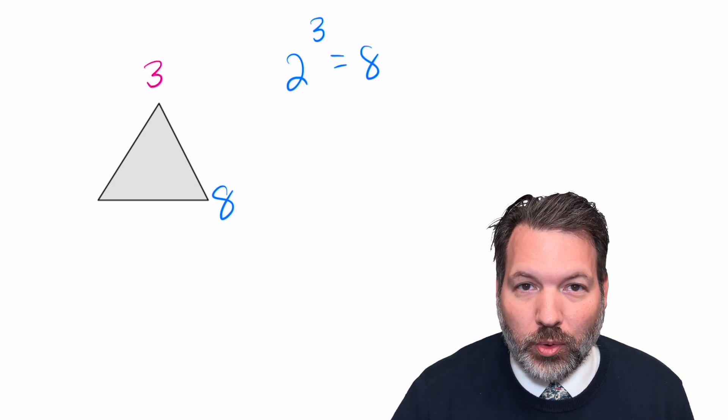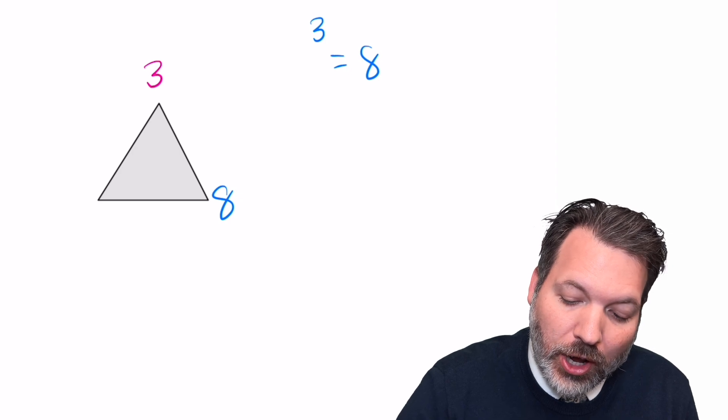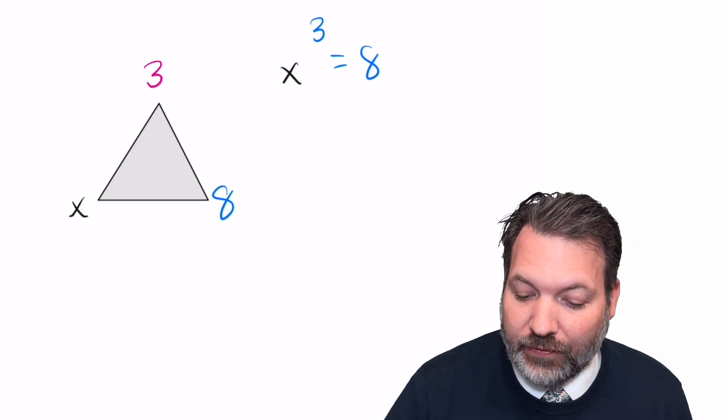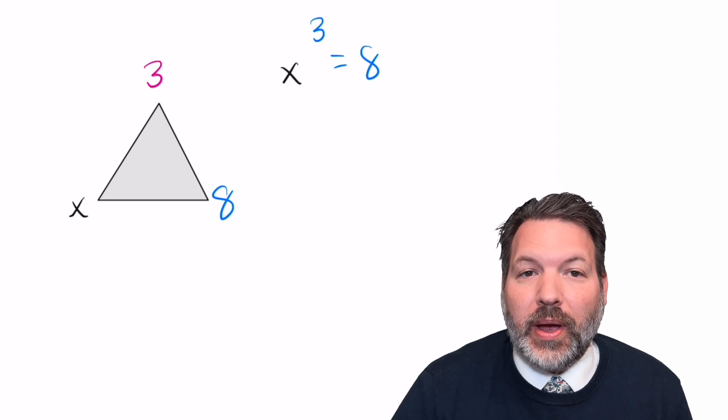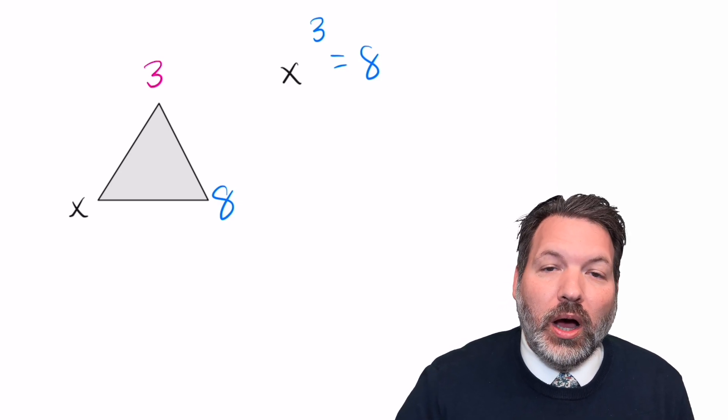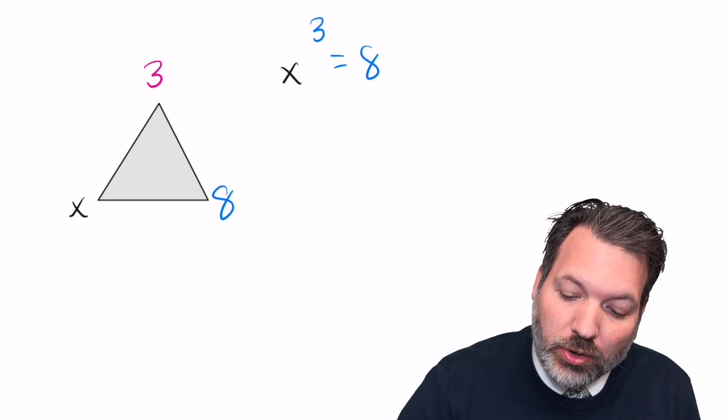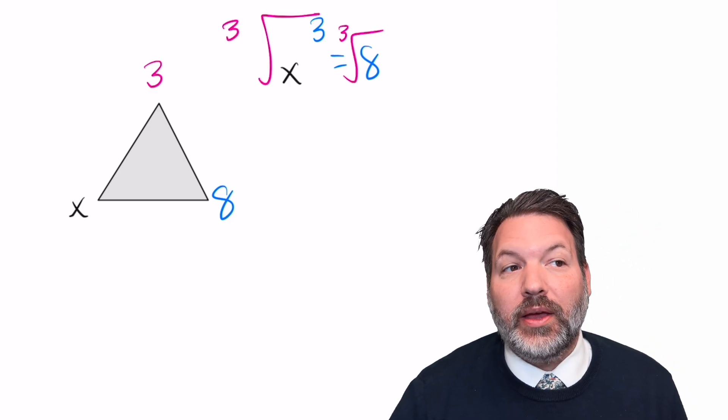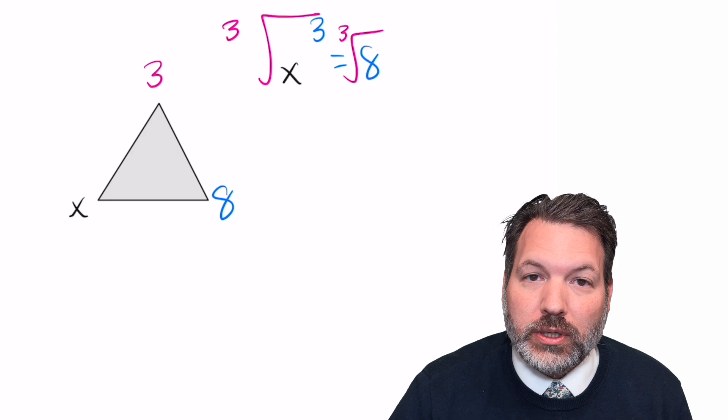But all of a sudden with exponentiation, there's a little wrench thrown into the works. If the thing that I don't know is the base of the exponent, so let's call it x for a second. If I know some x to the third power equals 8, I need to undo that power of 3 using something called a root, specifically in this case, a third root or a cube root.